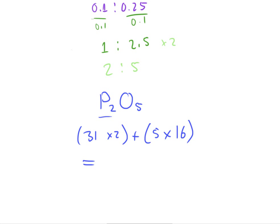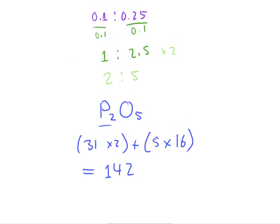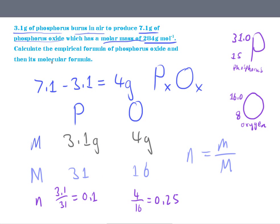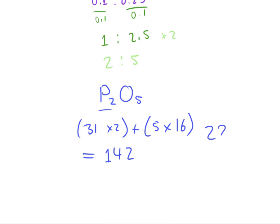This would give me 142. And the number I've got there as the molar mass is 284, 284 grams per mole. So, this here is the molar mass of the molecule. And this here is the molar mass of the empirical formula.